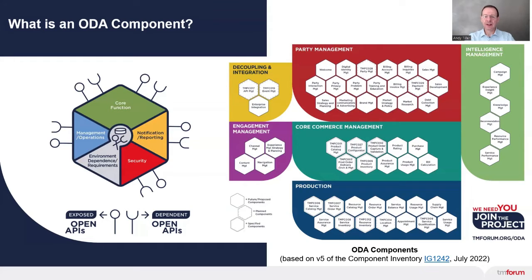This is similar to the old telecoms application map, TAM, which has been used by our industry for many years. TAM is superseded in the Open Digital Architecture by the green rhombus part of the ODA components. It uses the same functional framework as TAM, but with a more fine-grained grouping of functions into microservices-based software applications, as shown on the component inventory here on the right.